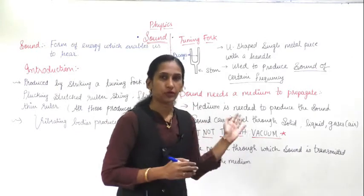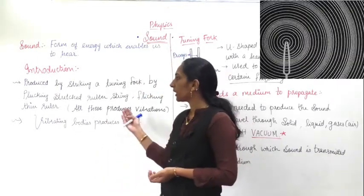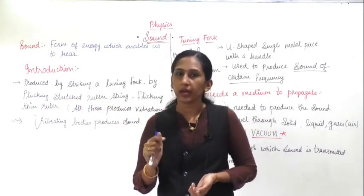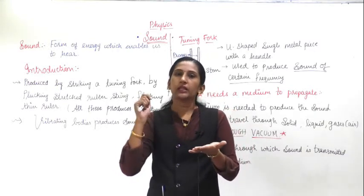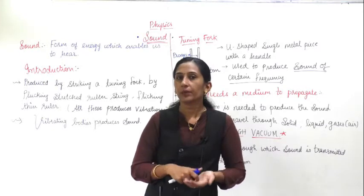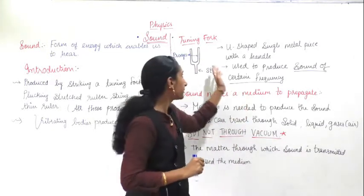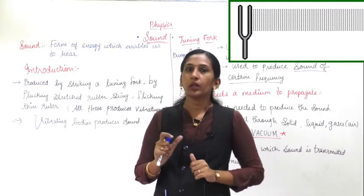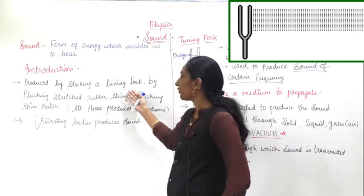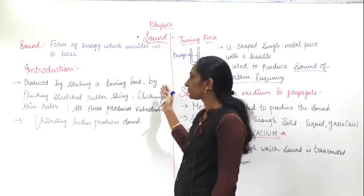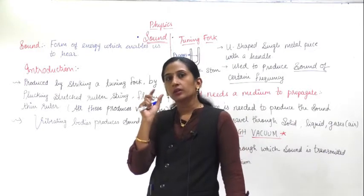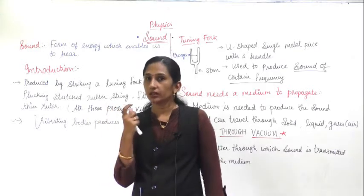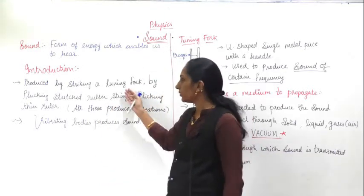This object is used to produce vibrations. To produce vibration, the tuning fork is used. You take the tuning fork in your hand, take a rubber pad, and strike it against the pad. When you strike it, there is a vibration in the prongs. When the prongs vibrate, the tuning fork produces a small sound, and when you bring it close to your ears you can hear the vibrating sound.